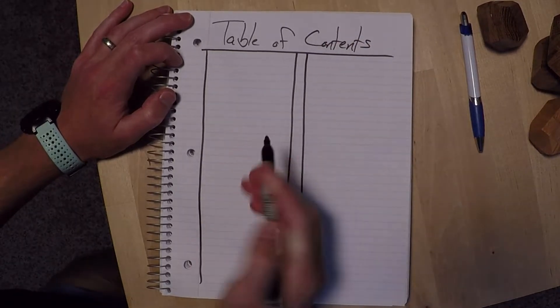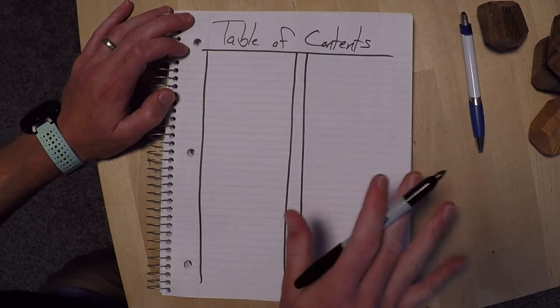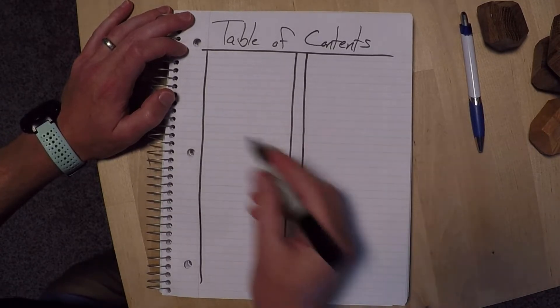So I technically have one, two, three, four columns. I only had to draw three lines though.